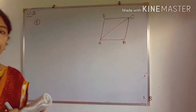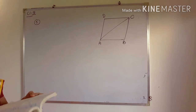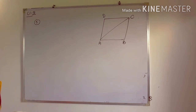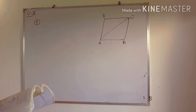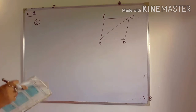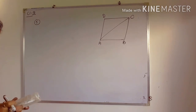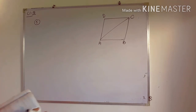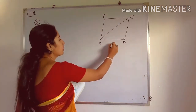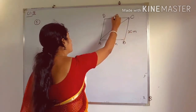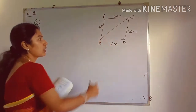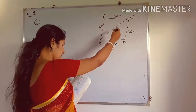Next is question number 5. A rhombus with green grass is given, in which 18 cows are grazing. If each side of the rhombus is 30 meters — recall all sides of a rhombus are equal — and the longer diagonal is 48 meters, we have to find how much area of the grass field each cow gets.